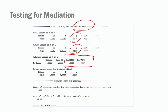Just to keep this complete, we also conduct the Sobel test. You'll notice that the terminology in the output file is not the same as what we clicked — instead of a Sobel test coefficient, it gives us a normal theory test for indirect effects, which is the Sobel test. In this case, our p-value for the Sobel test is less than 0.05, so it is significant as well.